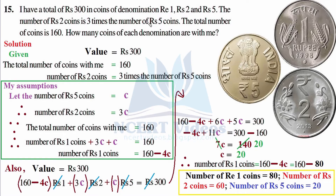Using these two given statements or hints, we have to find the total number of coins of each denomination — that is, how many coins of rupee 1, rupee 2, and rupee 5 I have. The idea remains the same as we had in question number 14, so let us try to solve our question.